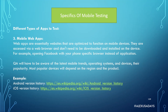The third type is mobile web apps — essentially websites optimized to function on mobile devices. They're accessed via a web browser and don't need to be downloaded and installed. For example, opening Facebook in your phone's browser instead of the app. As a mobile QA engineer, you also need to be aware of the latest mobile trends, operating systems, and device popularity, which often varies by region and product.